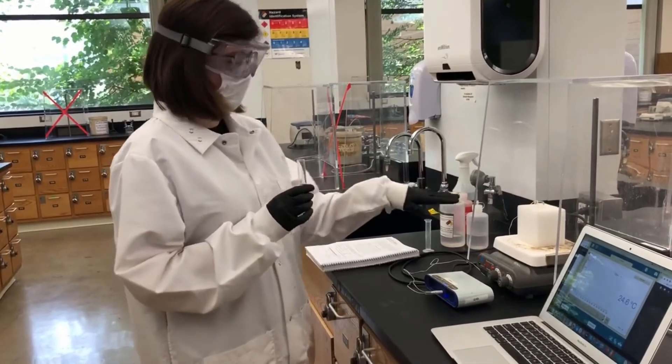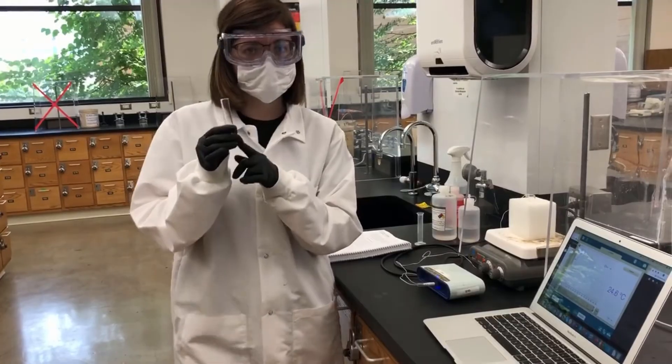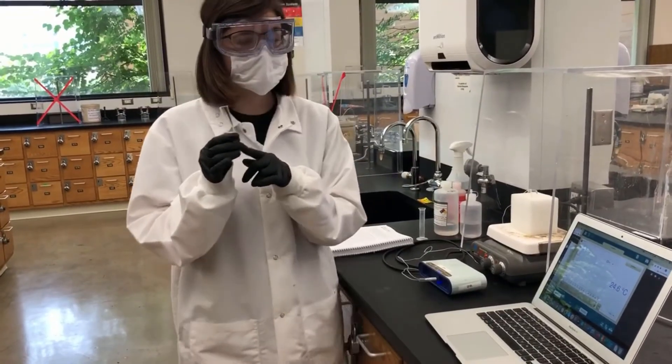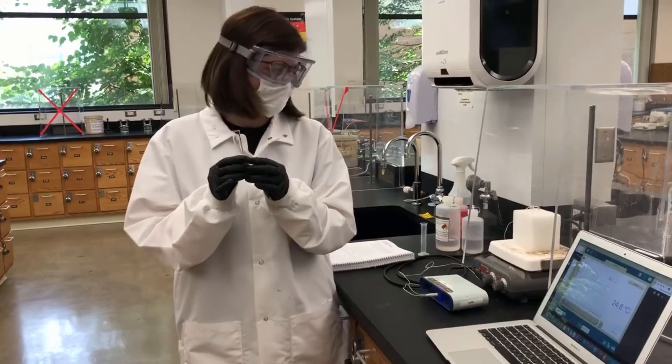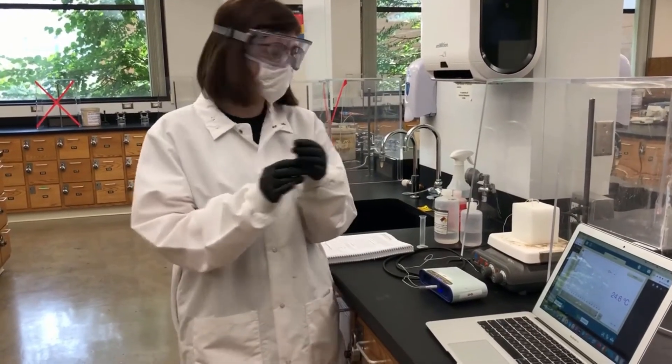We started out with 2.5 milliliters of the unknown in here and we're going to add 7.5 milliliters of the bleach because this is one of the ideal stoichiometric ratios. And then we'll just push start and see how much temperature changes.